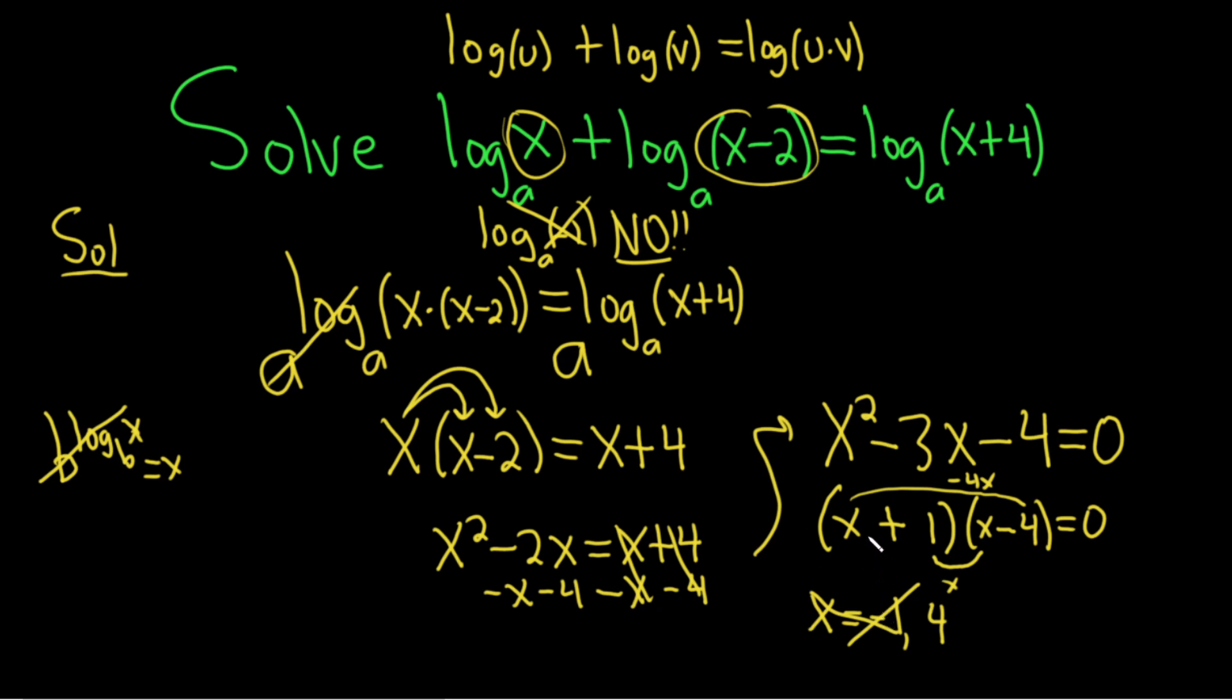The last thing we have to check is the number four. Let's put a four everywhere we see an x, and it's important that you use the original equation when checking. We have log base a of four plus log base a of two, which should equal log base a of eight. Using the product rule, log base a of four times two is eight, and that equals log base a of eight. Everything looks okay. So the answer to this equation is x equals four.